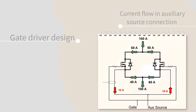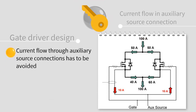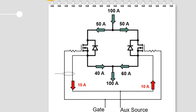With a common gate driver for all four switches, there is an alternative path for the main source current to flow via the auxiliary source connection. In the schematic, you can see this auxiliary source current shown at 10 amps in red.